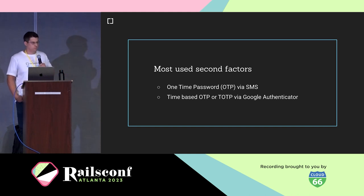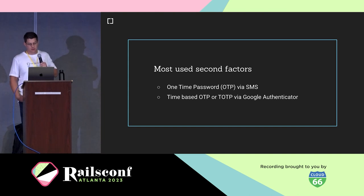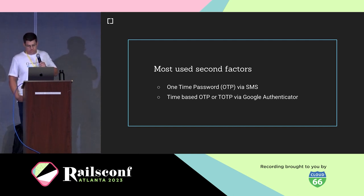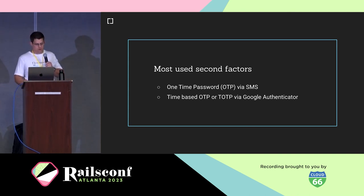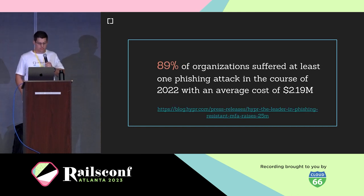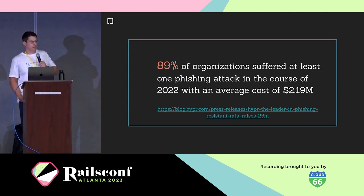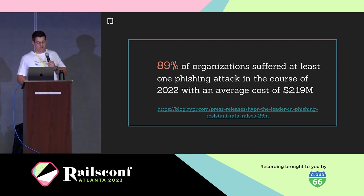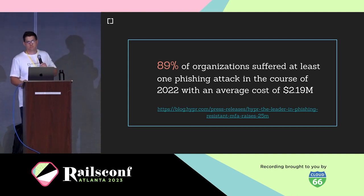Time-based one-time passwords through Google Authenticator are a little better, but also prone to phishing attacks, accessing your browser's cache to get the QR code used to set it up, and server clock manipulation — where a hacker enters the server and makes a specific code work forever. On top of that, only 28% of all users use some kind of second factor. 89% of all organizations suffered at least one phishing attack in 2022, with an average cost of over $2 million, and 64% of those companies still kept using passwords as their only authentication method.